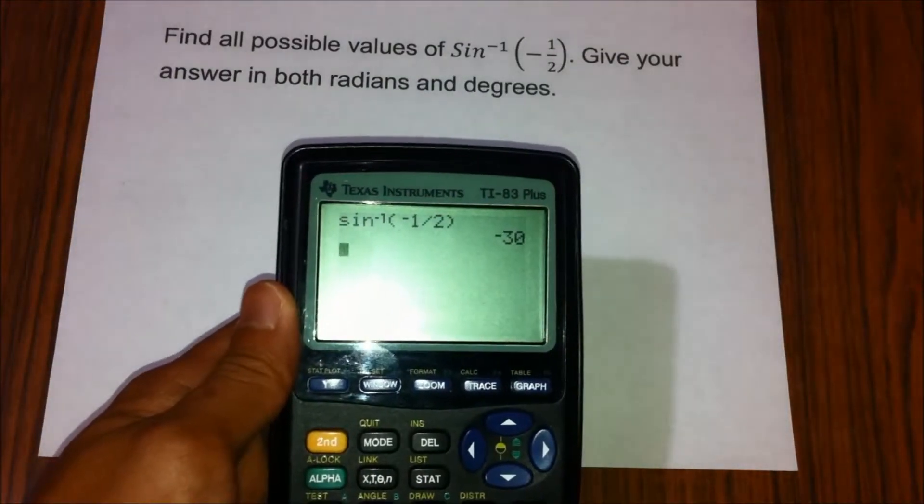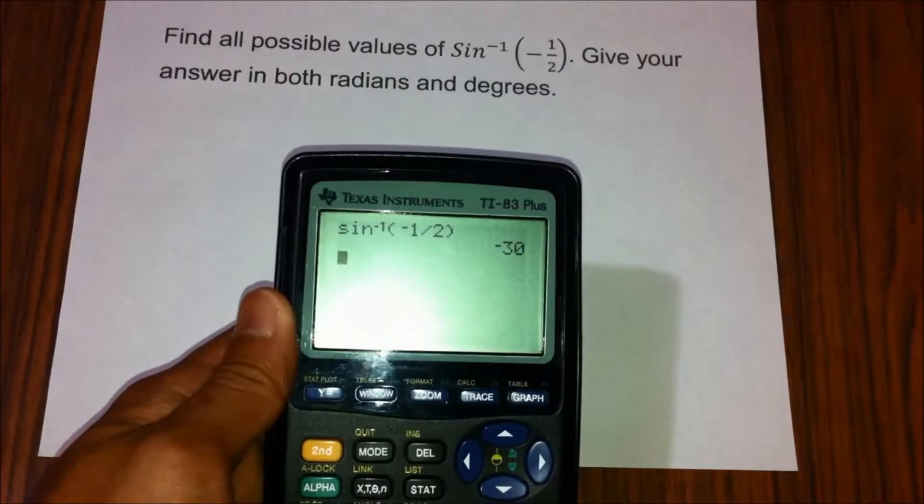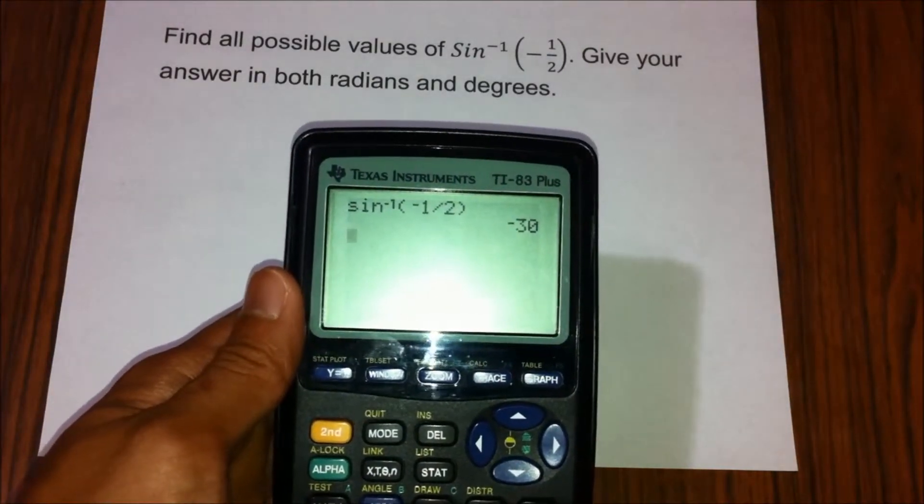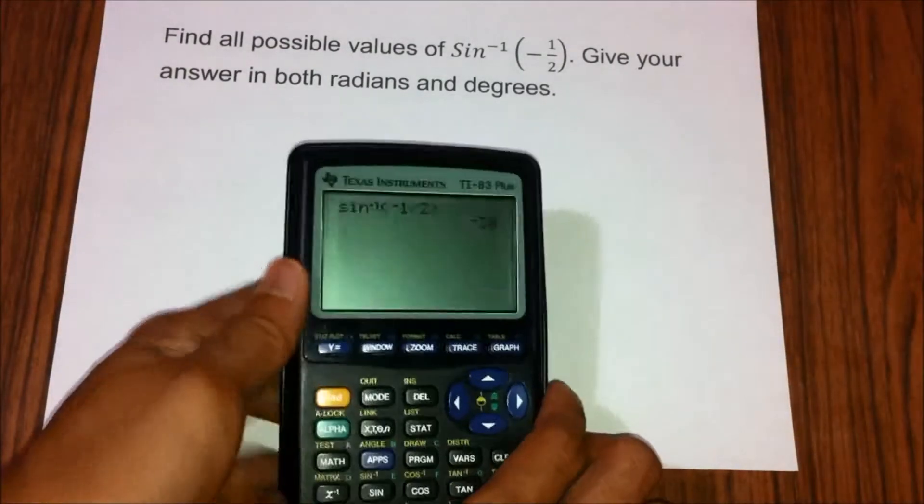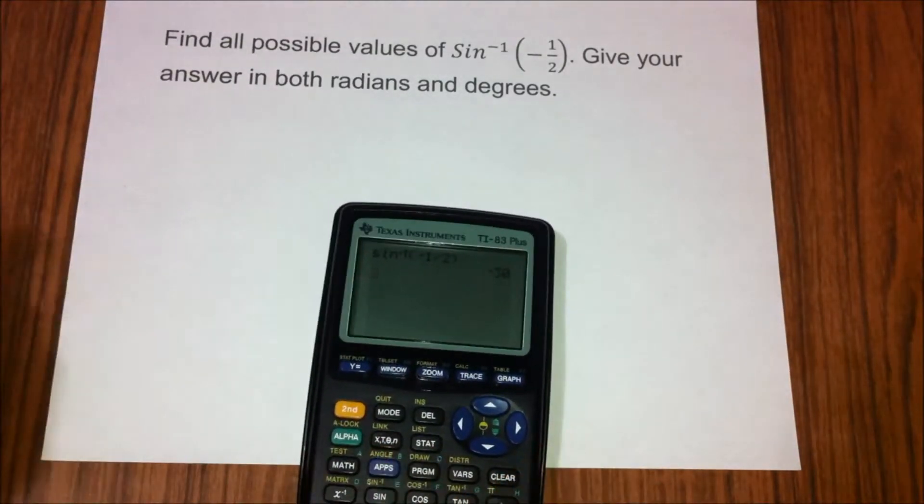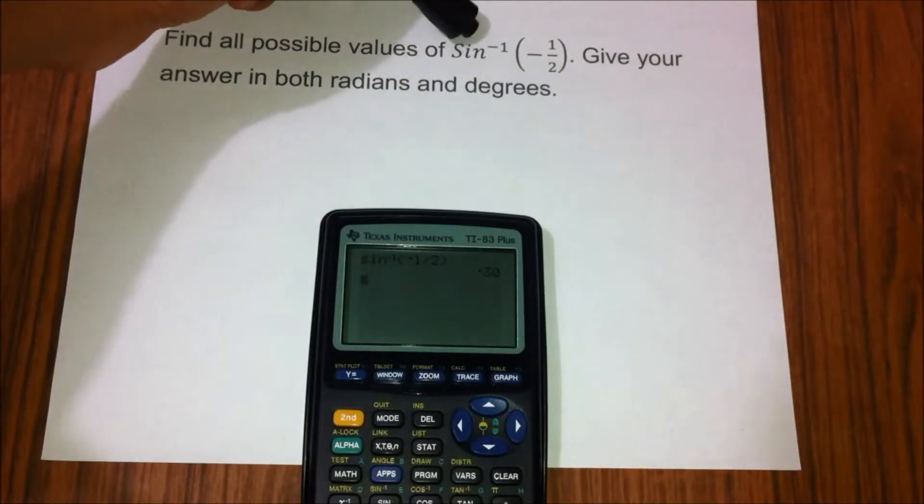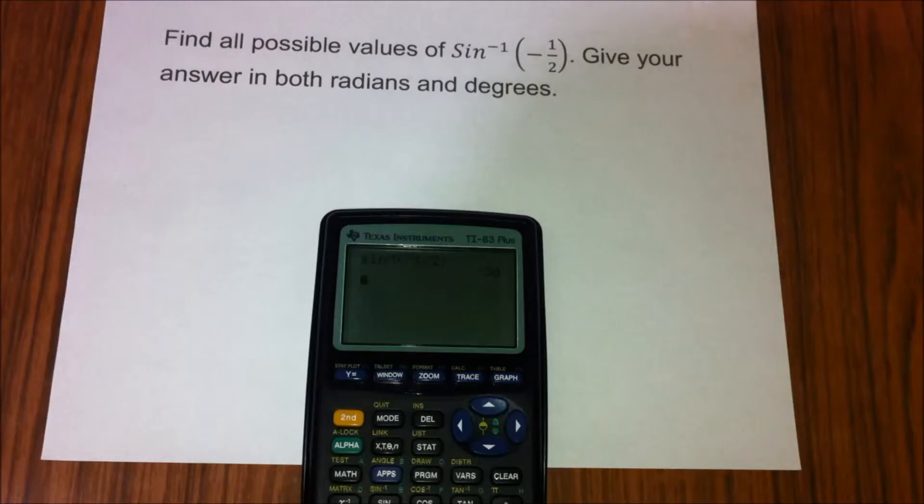Before finding the radian version of negative 30 degrees, we must check if negative 30 degrees is inside the domain since there is a restriction in the inverse sine. We can tell that by noticing the letter S from sine is capitalized.